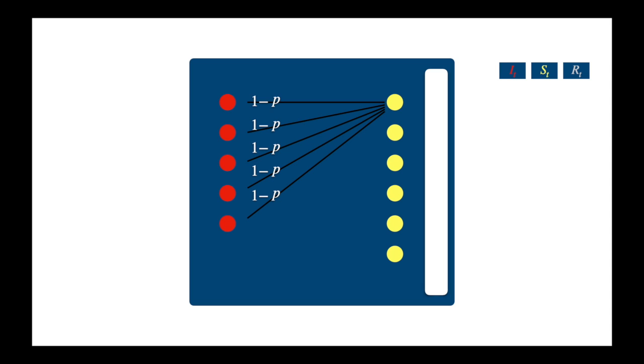And now if we assume independence, then the probability of not being hit by any of them, this not being hit by the first, and not being hit by the second, and so on, and not being hit by the last, is just the product of the probabilities of not being hit by each of them. Here these individual probabilities are equal, so we just raise it to the power of the number of infectives. We have I underscore T infectives, so that is why we raise 1 minus p to the power I underscore T.